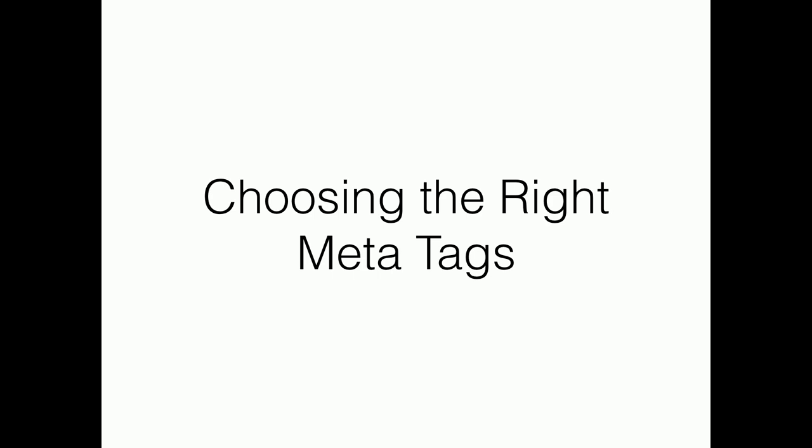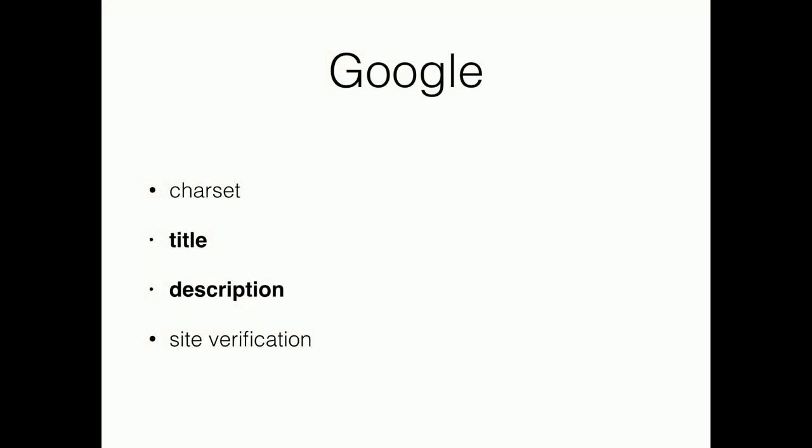Here are the metatags we chose for Princeton.edu. I'll start with Google, even though it's not a social platform. Google actually tells us exactly what they do and don't want — there's a page called 'Metatags Google Understands' and it's a very short list. The two I put in boldface — title and description — are important because we're going to see these over and over again. Title and description are used by each of the platforms. They want it in their own format, so we end up showing the same data multiple times. There's a lot of reuse even in metatags. Also, Drupal will take care of Charset for you. Site verification for Google is your connection to what used to be called Webmaster Tools — it proves site ownership, and we'll see that in Facebook as well.